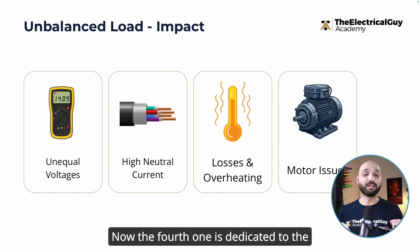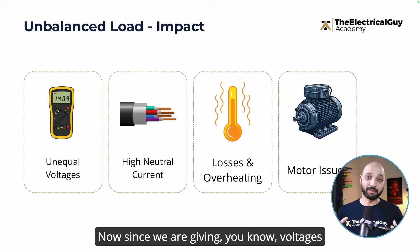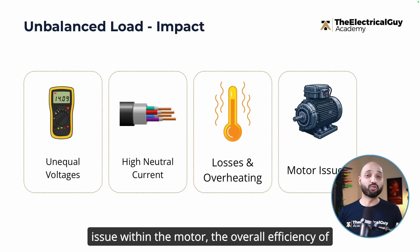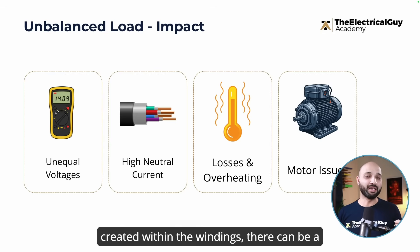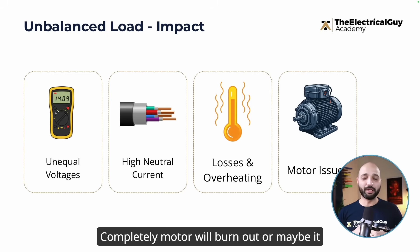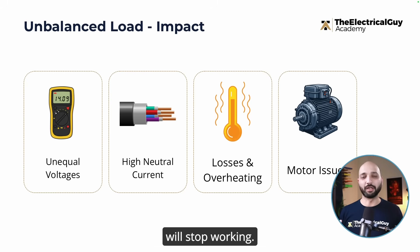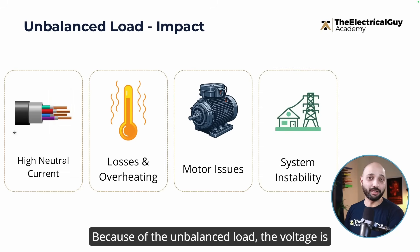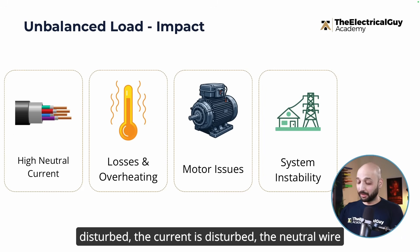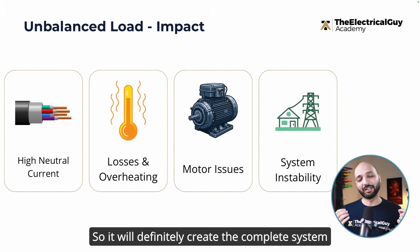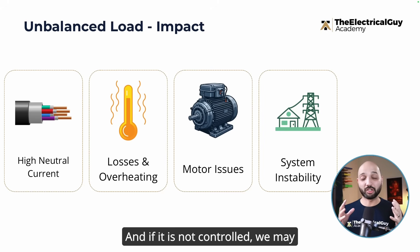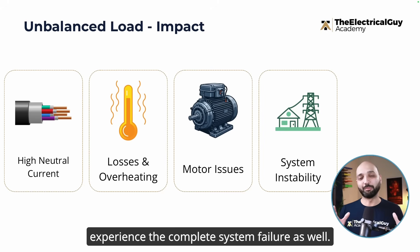The third impact is losses and overheating: increasing current raises I²R losses, and if these reach a certain limit overheating begins, leading to insulation breakdown, short circuit, and fire — a chain reaction. The fourth impact applies to motors: unequal voltages reduce motor efficiency, cause vibrations due to unequal magnetic fields in the windings, and can lead to premature motor failure or complete burnout. The fifth impact is system instability — voltage, current, and neutral are all disturbed, which can lead to complete system failure if not controlled.